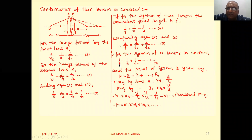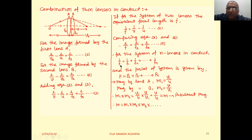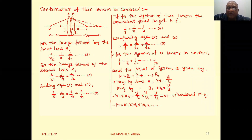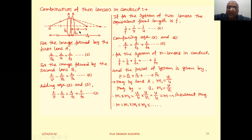This is the resultant focal length f of the entire lens system. Since 1/f equals power, as discussed in previous theory, we can write the resultant power of the given system as P = P1 + P2 + P3 + ... + Pn. For a lens system, the resultant power is the summation of the power of each individual lens.